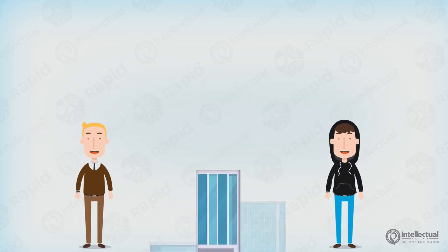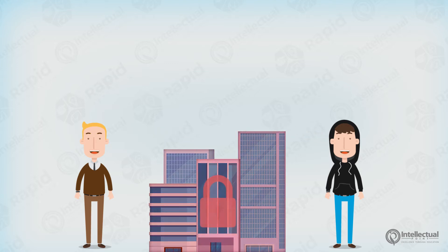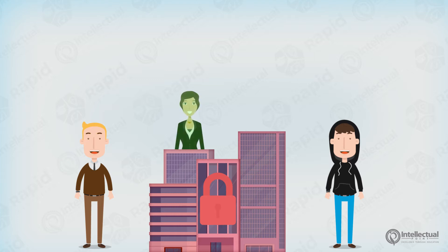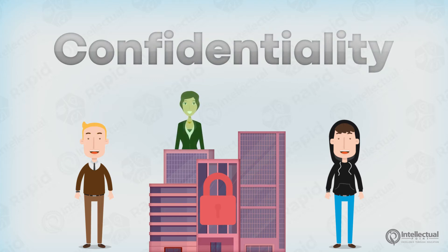Users and customers put a lot of trust in organizations to ensure that their personal information is kept private and safe. Confidential information should only be known to certain people, which is why confidentiality is one of the three key principles of the CIA triad.